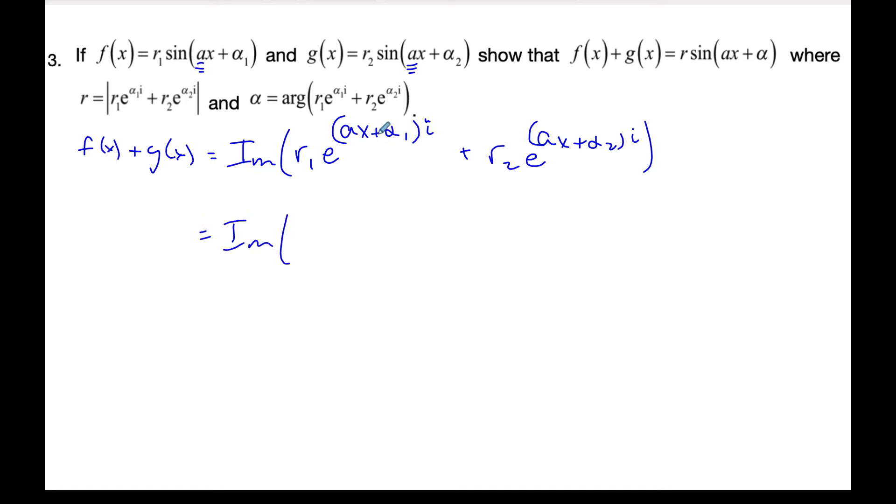All right, doing some algebra on my exponents, I know this is E AX I distributing the I as well times E alpha 1 I plus R2 E to the AX I times E to the alpha 2 I. Continuing on here I know that I can take a look at I have a factor here that is common. So I have E to the AX I times R1 E to the alpha 1 I plus R2 E to the alpha 2 I.